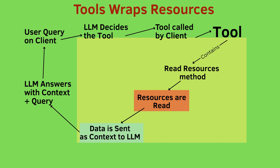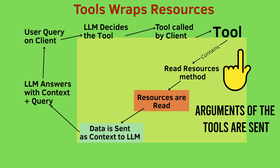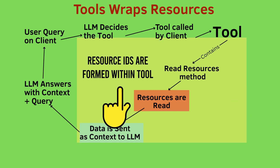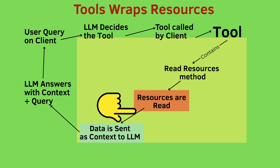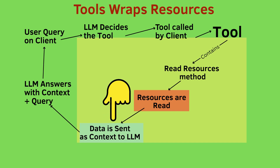We can see how the tool is called by the client — when it calls, the arguments for the tool are also sent. Resource IDs are formed inside the tool function using those arguments. Then resources are read with the URI, and the data that is read is packed as context and sent to the LLM.